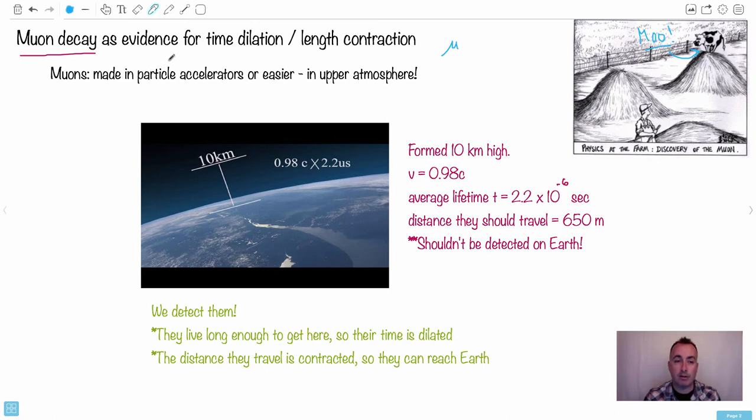But actually, they're also made just in the upper atmosphere naturally. So what happens is some cosmic rays will come in, and they'll slam into something in the atmosphere here and make this little muon. These happen around 10 kilometers up high here. They're around 10 kilometers up where these muons can be created.